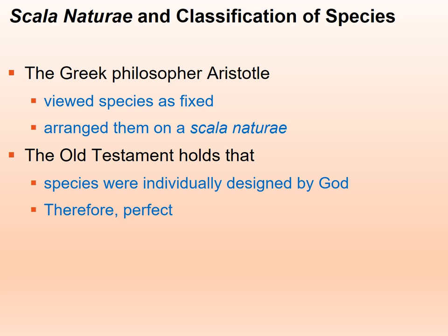The Greek philosopher Aristotle had his own views of species. He viewed them as fixed and arranged them on what's called the Scala Naturae — in order from more simple to more complex — but each species was basically fixed and doesn't change. So a whole new species doesn't arise; it just stays that way, and then new species arise and species go away.